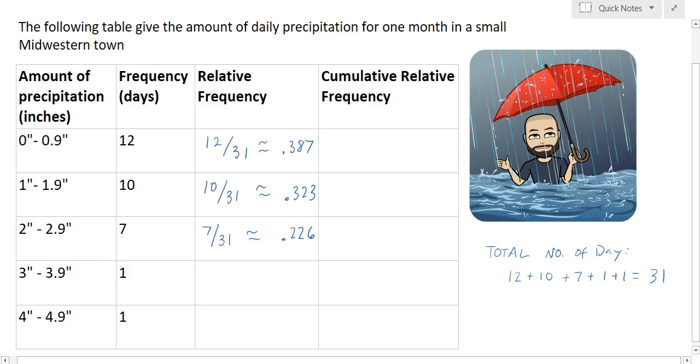For the 3 to 3.9 inch category there was only one day out of 31, so that's a relative frequency of 0.032. And then same for the 4 to 4.9 inch category, 1 out of 31 is 0.032. So these values are called relative frequencies. We take the frequency divided by the total number of days accounted for.